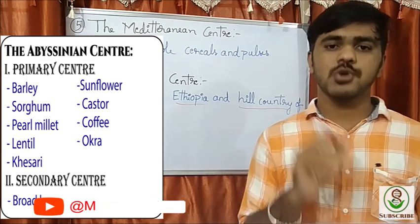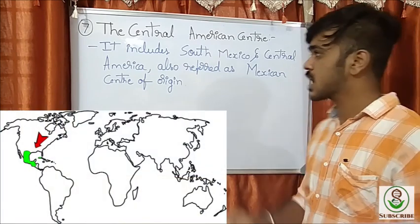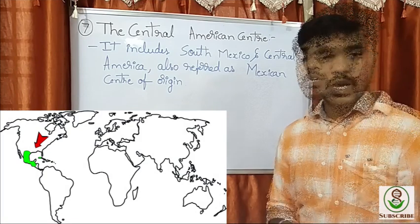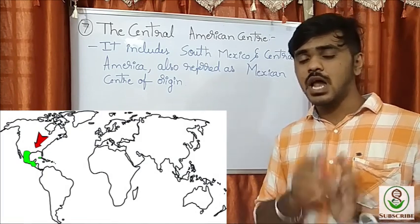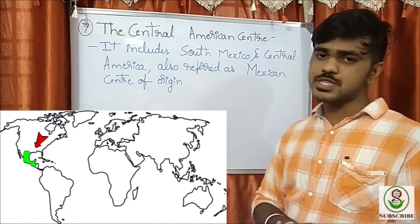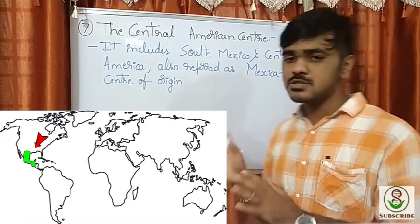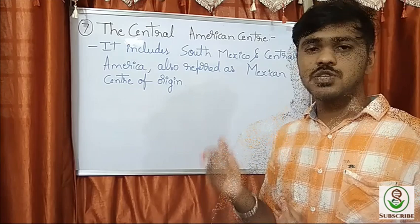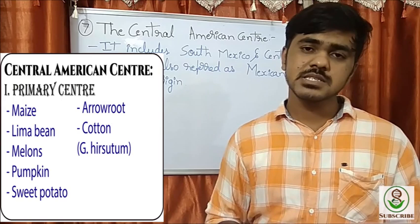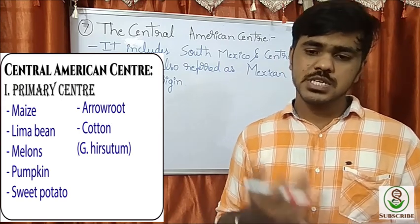The Central American center of origin includes South Mexico and Central America. Mexico has large biodiversity, so it is also known as the Mexican center of origin. It is the primary center of origin for crops like lima bean, maize, melons, pumpkin, sweet potato, arrowroot, and cotton (Gossypium).